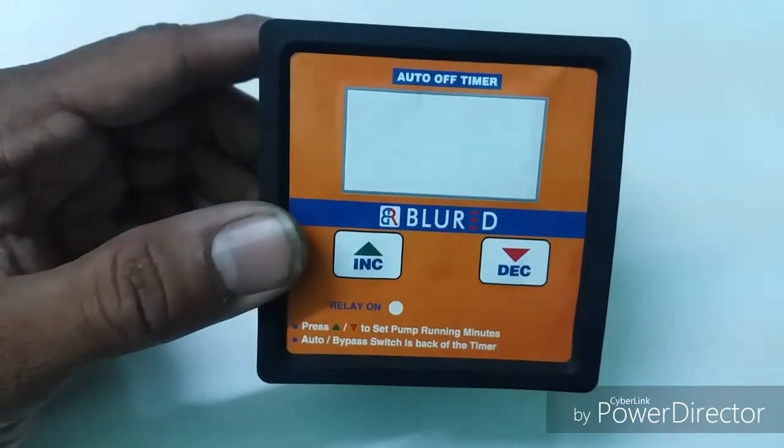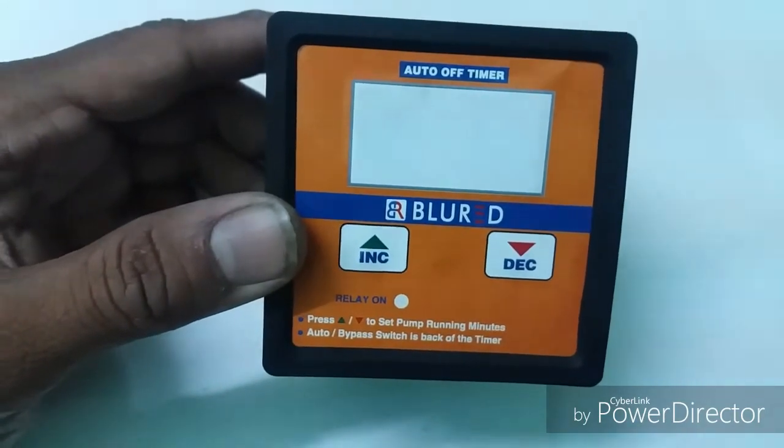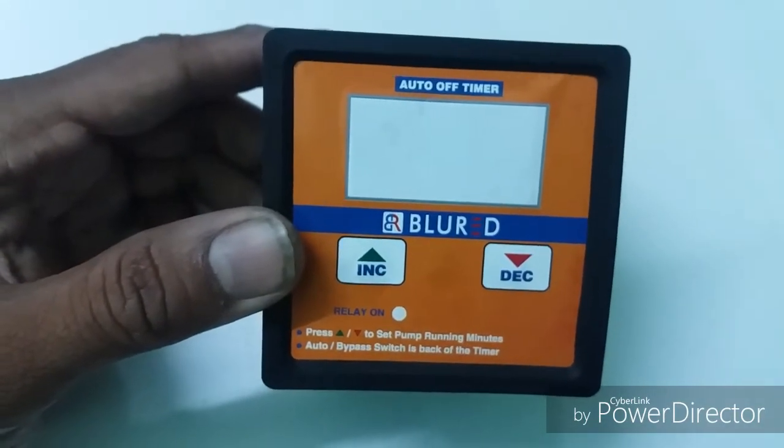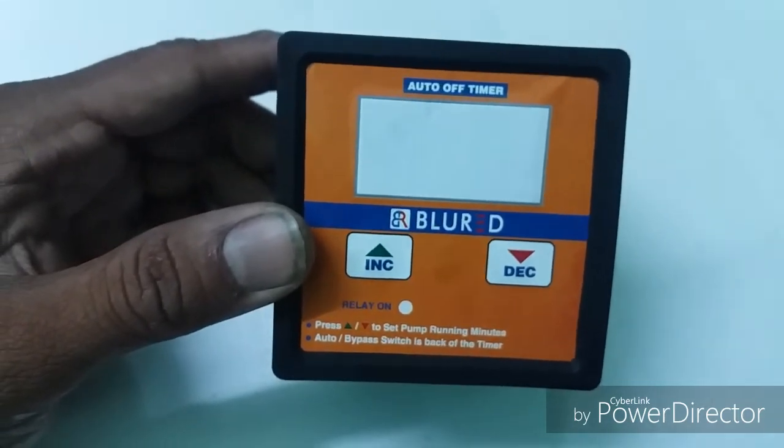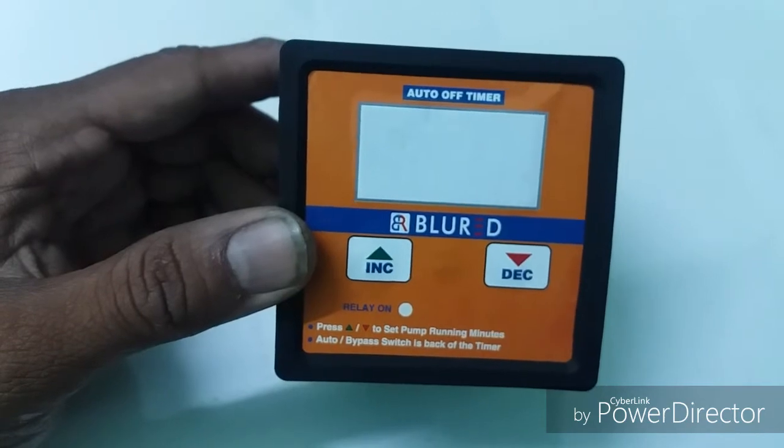This is the auto off timer. By using this timer, you can control your pump, electrical appliances, or any electrical equipment.